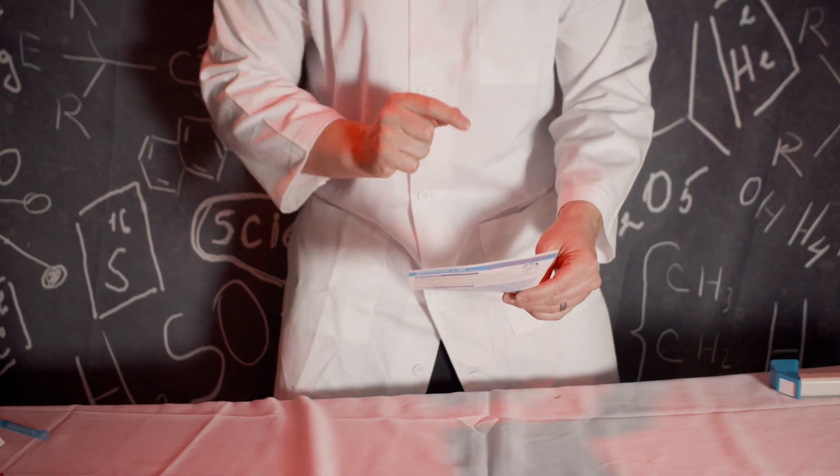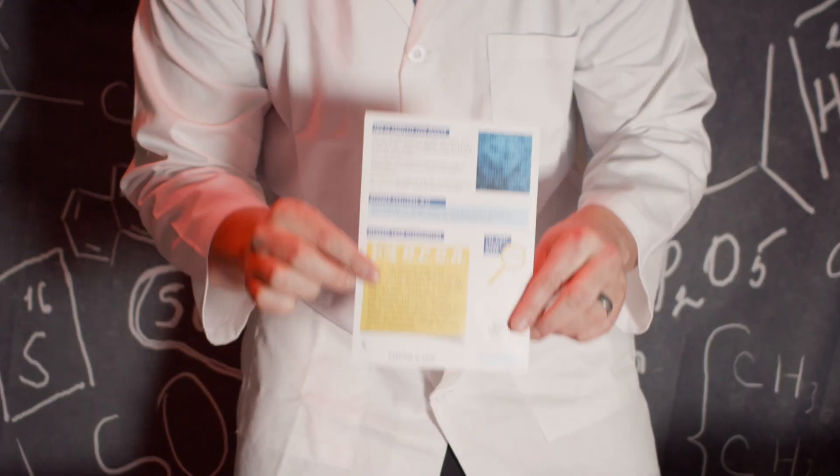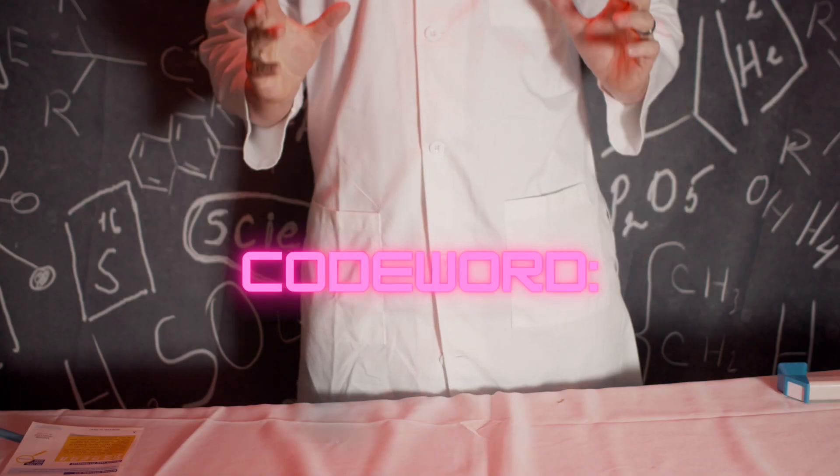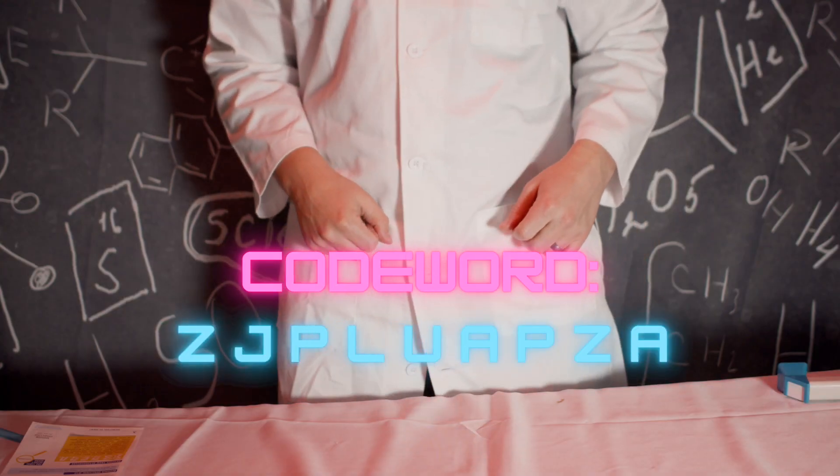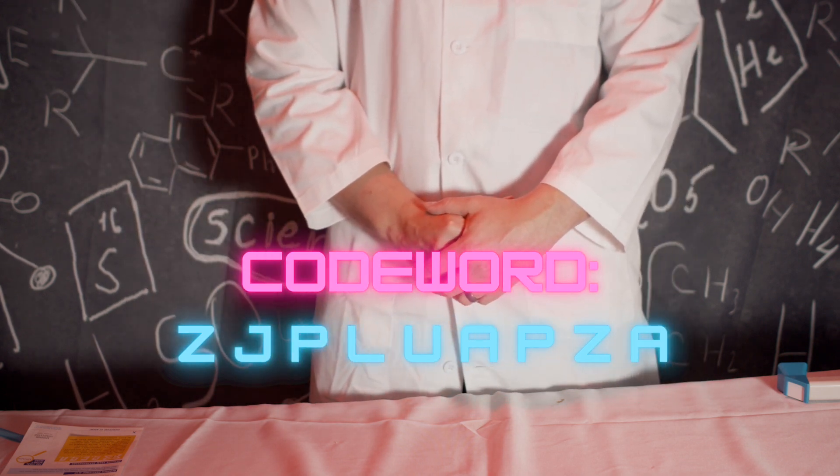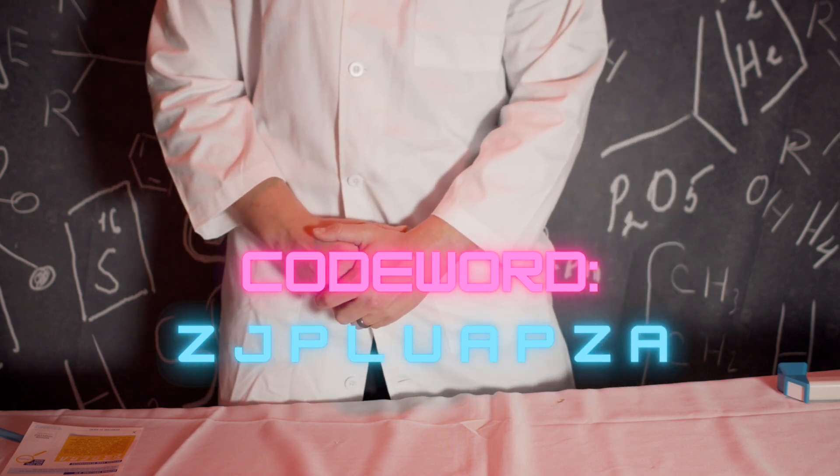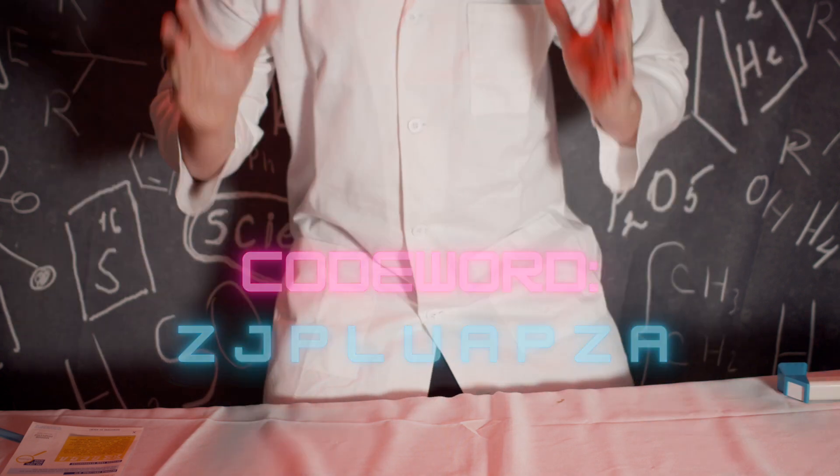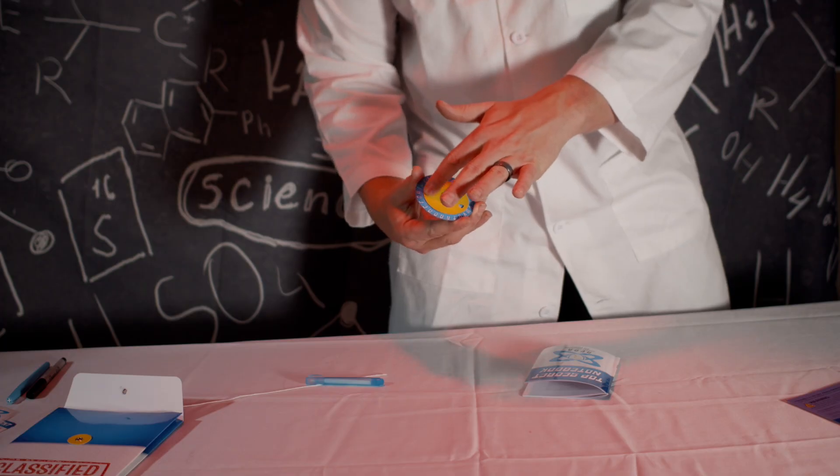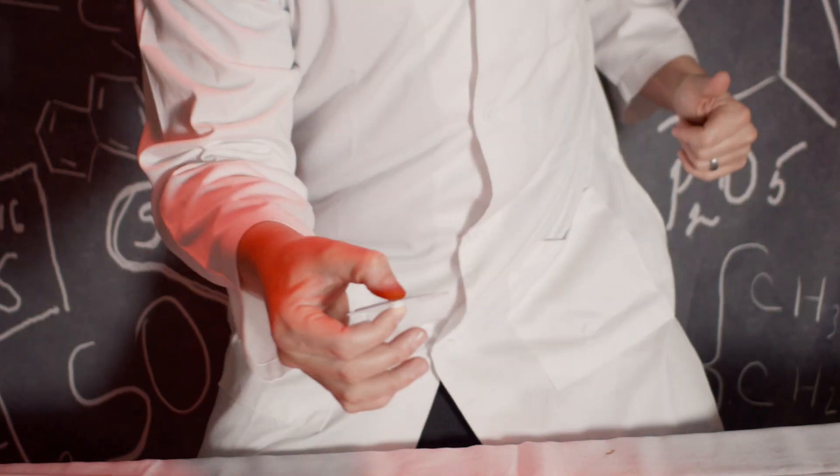Look here, there is another part of our mission. We also need to solve a secret code. The code is the following: Z, J, P, the letter L, the letter U, A, P, Z, and finally the letter A. This is the code word we must decipher. Not to worry, we will use the pre-made decoder wheel. Spies, let's do it!